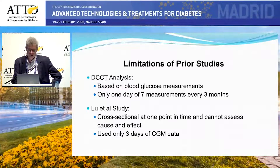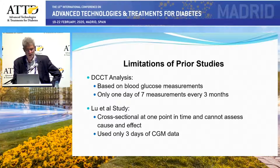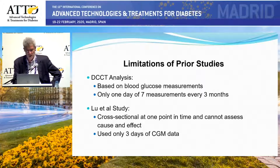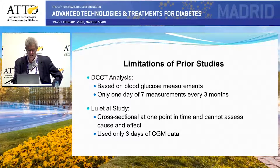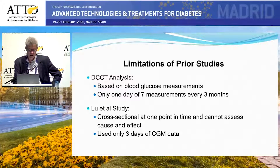These studies have limitations. DCCT was based on blood glucose measurements, not CGM — only seven measurements once every three months — yet even with that little data we saw a strong association. The Liu study from China was cross-sectional, so we can't assess cause and effect, and those three days of CGM data don't seem necessarily representative based on the hemoglobin A1C — but nevertheless we saw a strong association there as well.